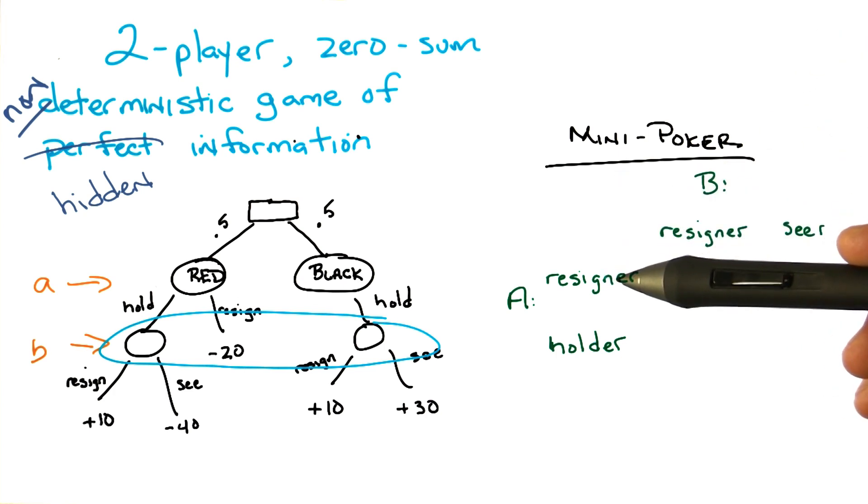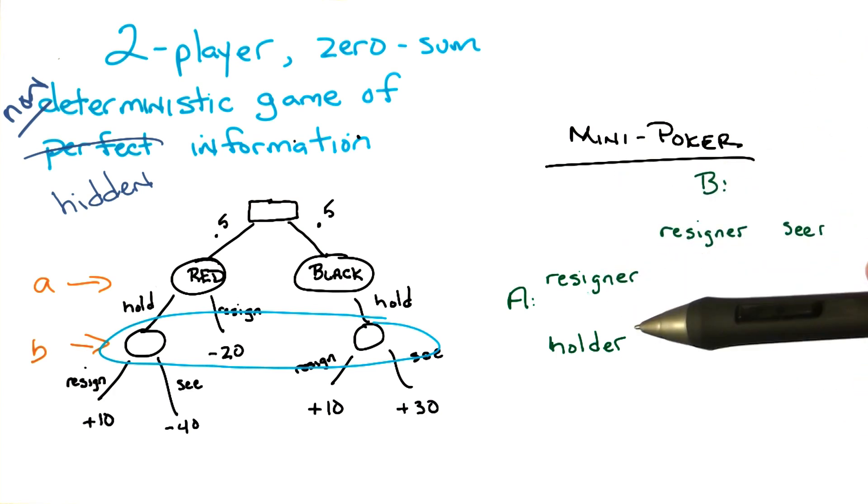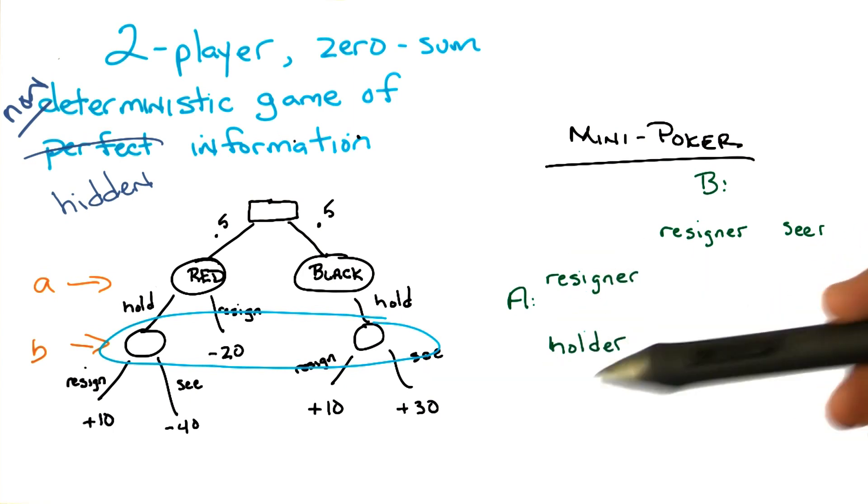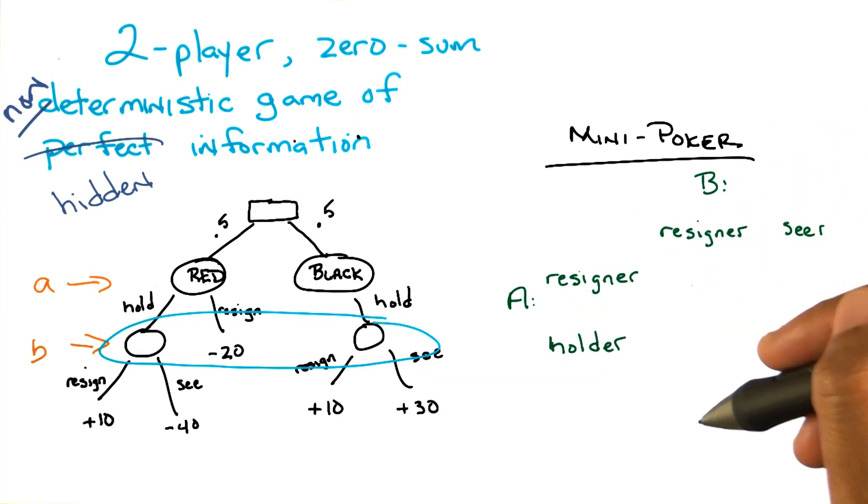Ultimately B can either be the kind of person who resigns whenever A holds, or chooses to see whenever A holds. Right? I see.